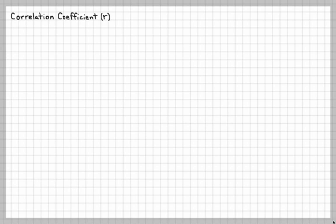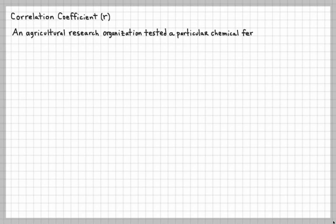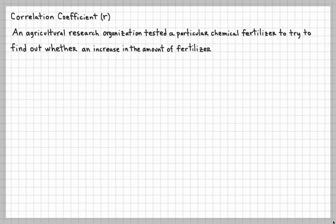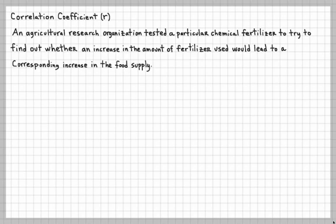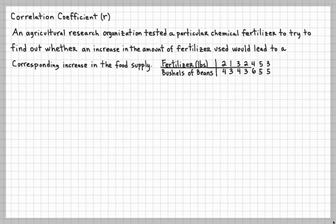Now let's do an example of the correlation coefficient. An agricultural research organization tested a particular chemical fertilizer to find out whether an increase in the amount of fertilizer used would lead to a corresponding increase in the food supply. The data shows fertilizer in pounds and bushels of beans. The fertilizer is going to be x because it's independent, and the beans produced will be y — the dependent variable because it depends on the fertilizer.